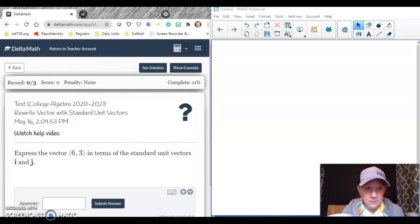Alright, so we're going to look at some vectors. This says express 6,3 in terms of the standard unit vectors i and j.